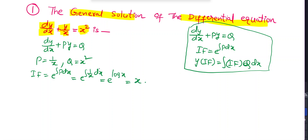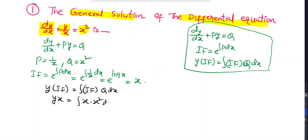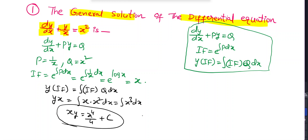Writing the general solution: y·x = ∫x·x² dx = ∫x³ dx = x⁴/4 + C. This is the general solution of the given differential equation.